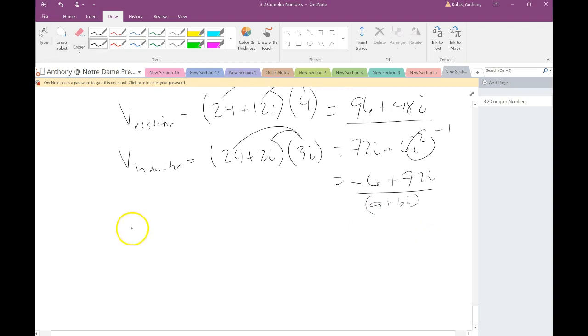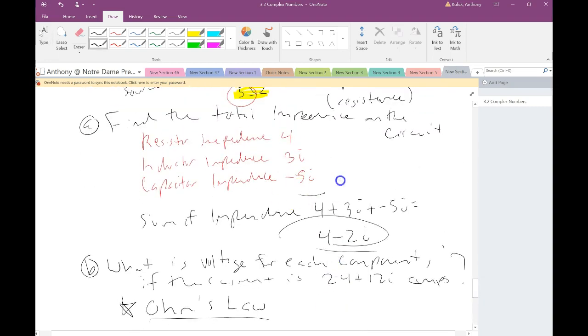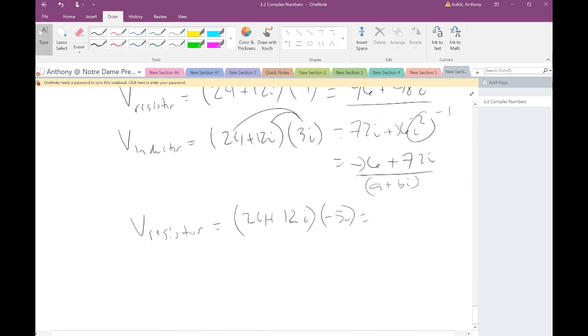My voltage at the inductor is 24 plus 12i. And then I go back and look up the resistance on my inductor was 3i. So that gives me 72i plus 36i squared. And remember that i squared is negative 1, so that's actually negative 36 plus 72i. Again, remember I like to write that this is a plus bi form. And the voltage across the capacitor, again, current, that should be... sorry about that. 24 plus 12i times negative 5i. Again, remember that we said the capacitor is negative 5i. And then we just distribute again. So that gives me negative 120i minus 60i squared. Remember, i squared is negative 1, so negative 60 times negative 1 is positive 60, minus 120i. So there's the answer for this.